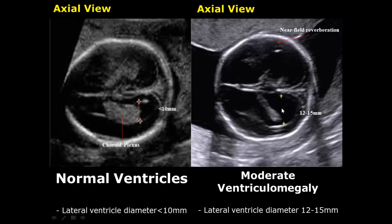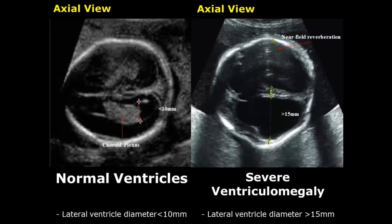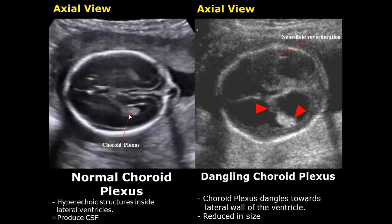As you can see, moderate ventriculomegaly appears larger compared to mild. In severe ventriculomegaly, the diameter of the lateral ventricles exceeds 15 millimeters. The choroid plexus are hyperechoic structures inside the lateral ventricles that produce cerebrospinal fluid and normally occupy most of the space inside the ventricles. In severe ventriculomegaly, a condition known as dangling choroid plexus occurs.